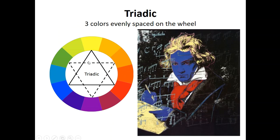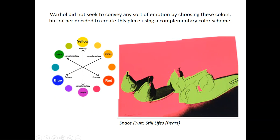Triadic — tri means three — is where you use three colors that are evenly spaced on the wheel, giving you a triangular arrangement. A great example shows red, blue, and yellow together in a Beethoven portrait. Warhol did not seek to convey emotion by choosing these colors; rather, he created pieces using complementary color schemes — like pink and green directly across from each other on the color wheel.